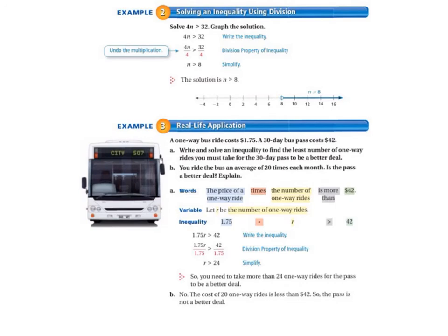On the next page, Example 2, we have 4n is greater than 32. So again, our first step is always to write the inequality. And then we use the division property of inequality and we divide both sides by 4 to undo the multiplication. So 4 divided by 4 is 1, that leaves n by itself on the left. And 32 divided by 4 is 8, so that leaves 8 on the right. So n is greater than 8. The solution is n is greater than 8.